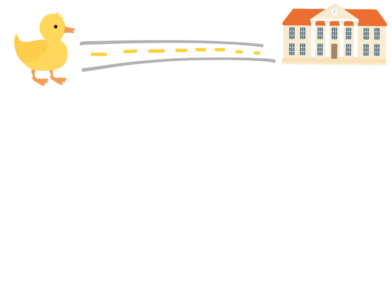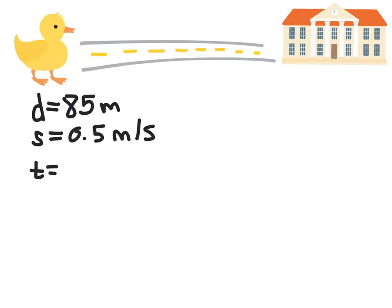It's always best to start with what we know. In this example we know that the distance to the school is 85 meters, and the speed is 0.5 meters per second, and ultimately time is what we're looking for.